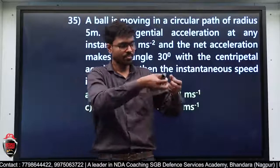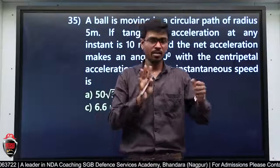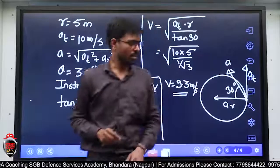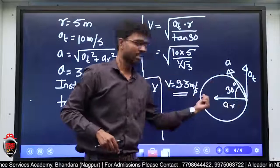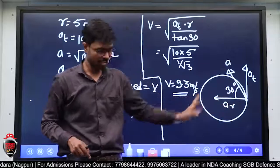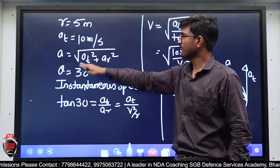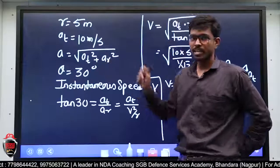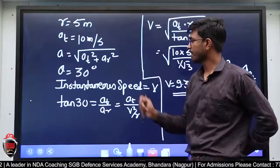Diagram में — tangential acceleration, radial/centripetal acceleration, और net acceleration जो 30 degree angle बना रहा है radial acceleration के साथ। Given data: radius = 5 meter, tangential acceleration दिया है। Net acceleration = √(at² + ar²) — Pythagoras theorem। Theta = 30 degree दिया है।